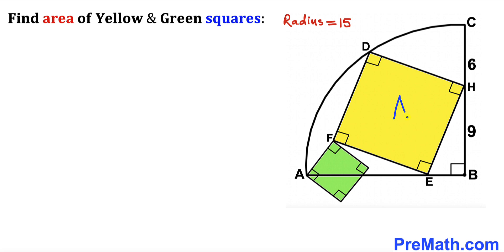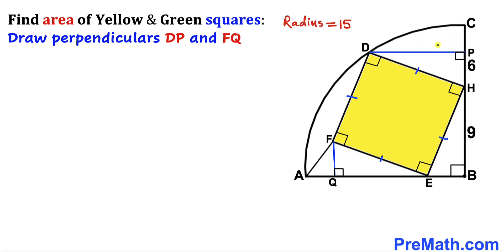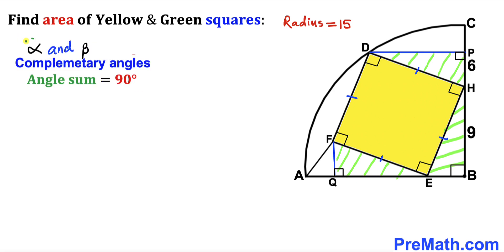We are going to focus on this yellow square and calculate its area first. Since we are dealing with a square, all sides are equal in length. I have drawn perpendiculars DP and FQ as you can see in the diagram, and as a result we got three right triangles. Let's assume that alpha and beta are two complementary angles — in other words, the sum of these two angles must be equal to 90 degrees.